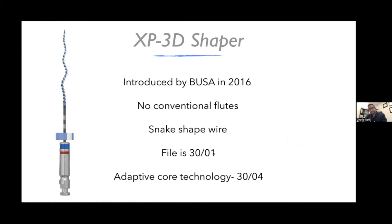In 2016, to help find a solution for non-anatomical instrumentation, Brassler USA introduced the XP3D Shaper. As we can see in the picture, it has no conventional flutes — it's a snake-shaped wire. At rest, the file is at a size 30 and a taper of 1%. The file is made of a special alloy called MaxWire, which gives the file the ability to adapt itself to the anatomy of the root canal system — what we call adaptive core technology. This file can expand up to a size 30.04.